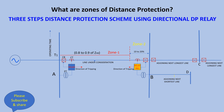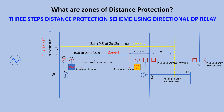Zone two distance is set to cover the remaining 10 to 20 percent of the protected line plus 50 percent of the adjoining line length. It is set to cover remote end busbar and hence is called an overreach. Zone two range is set at 150 percent of protected line length, that is 100 percent of the protected line plus 50 percent of the shortest adjoining line length, whichever is less. The operating time of zone two is delayed by 15 to 45 cycles so as to be selective with zone one of the adjacent line, giving zone one relays a chance to do their job first.